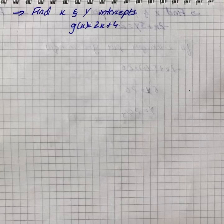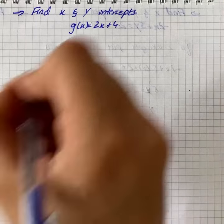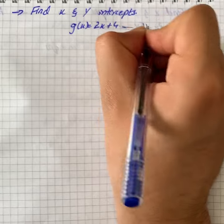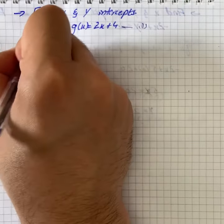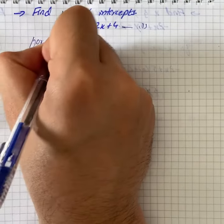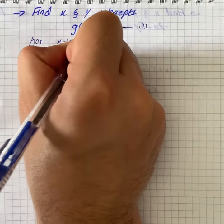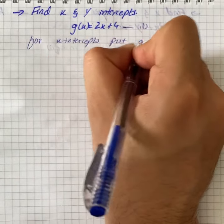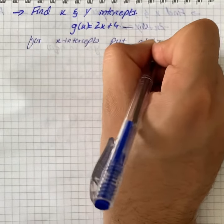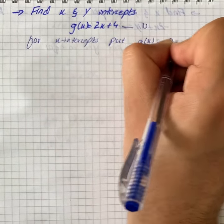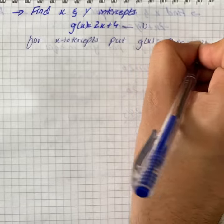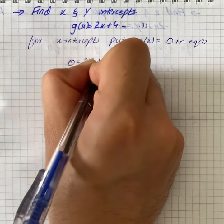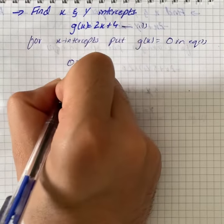The question says: find x and y intercepts. We have g(x) = 2x + 4. We will name it as equation 1. For x-intercepts, put g(x) = 0 in equation 1, so we will have 0 = 2x + 4.